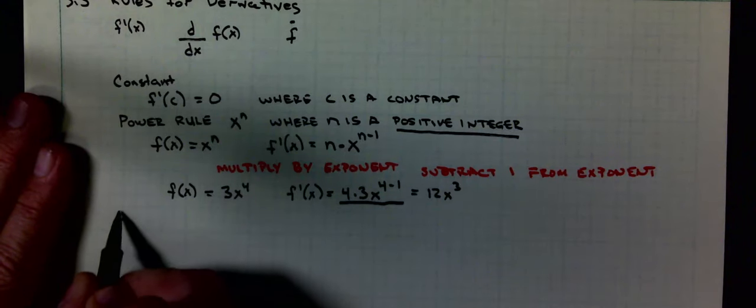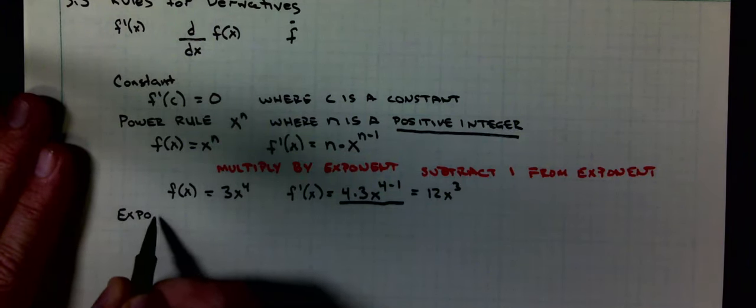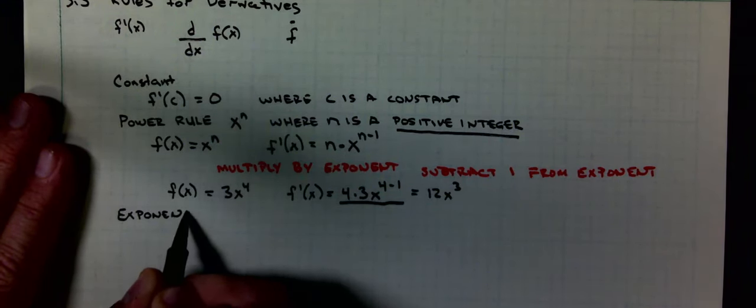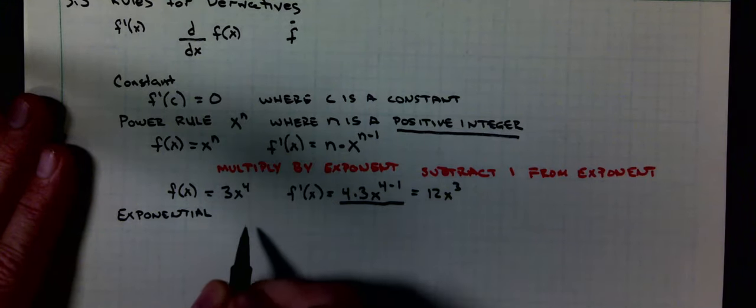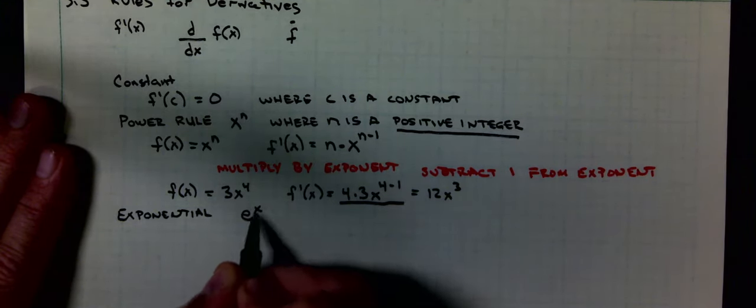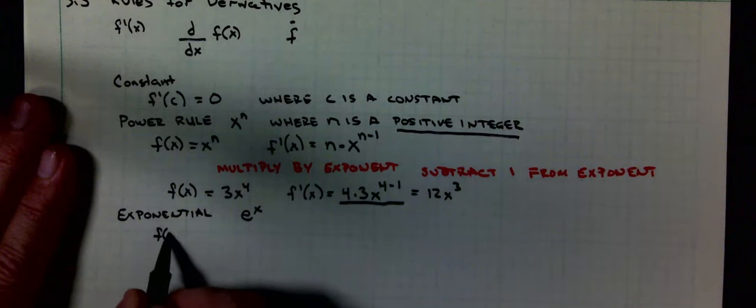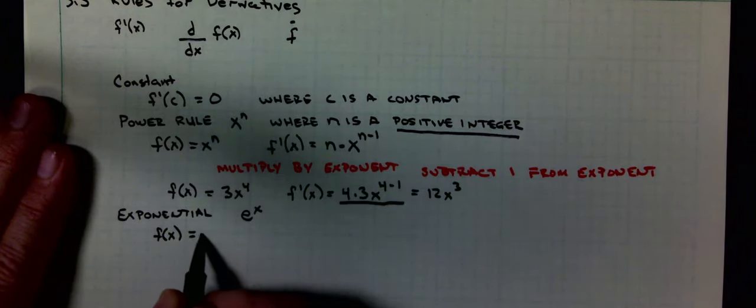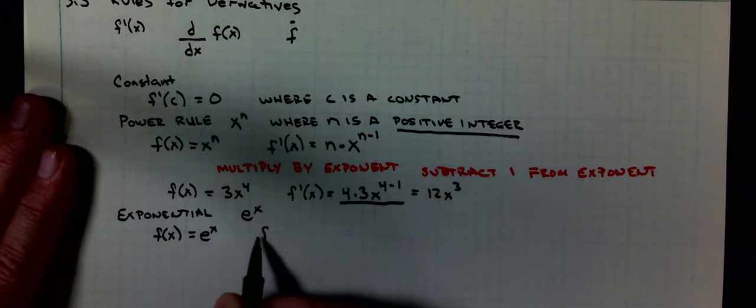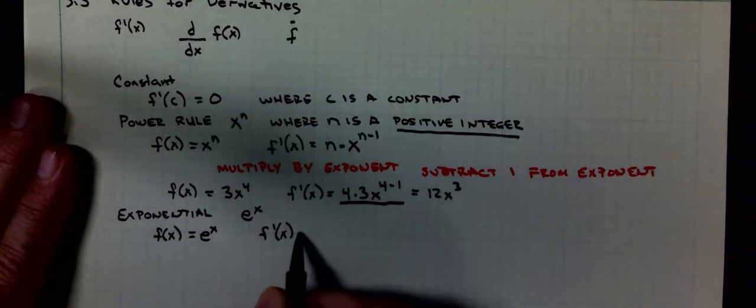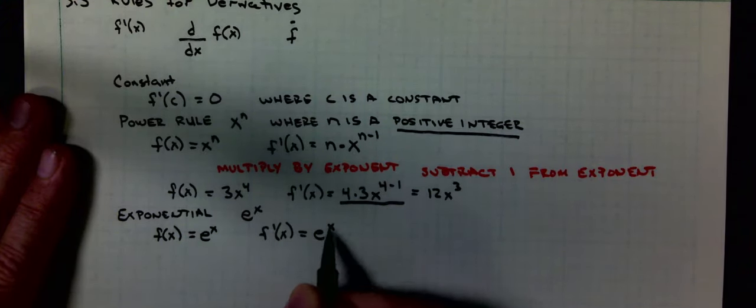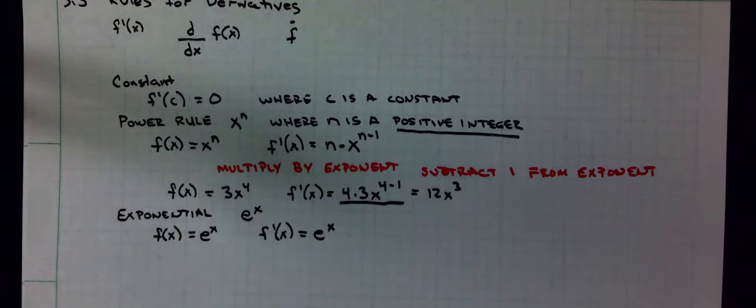Our exponential function: if f of x equals e to the x, then f prime of x equals e to the x. e to the x is its own derivative.